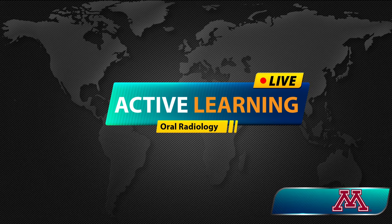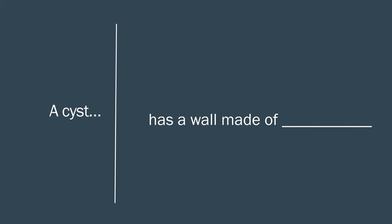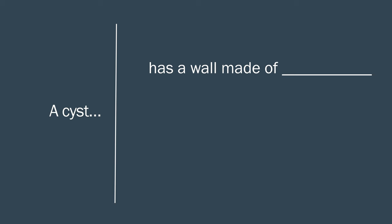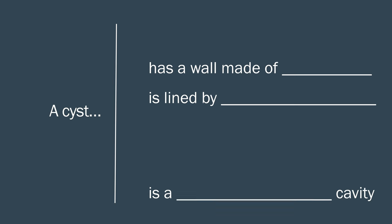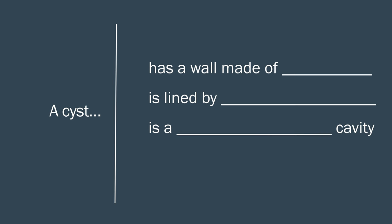We are going to do some active learning. Please take out your pen and paper and answer these questions without going back to the first part of the video. A cyst has a wall made of... A cyst is lined by... A cyst is what kind of cavity... And a cyst is filled with...